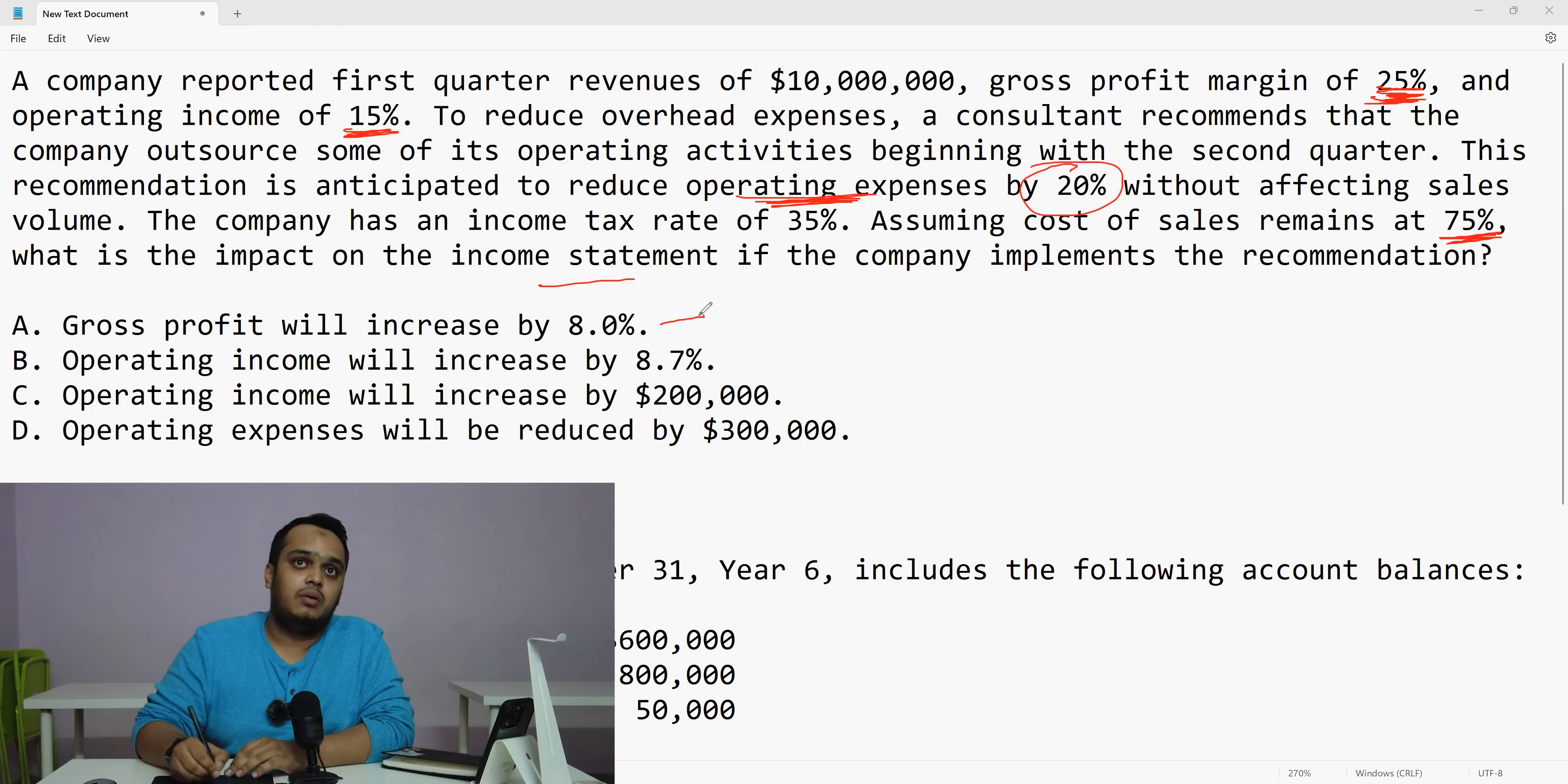So first of all, when these type of calculations are given, you can do it in two ways. What you can do, you can start taking one by one as an option and see whether they are right or not. And whichever suits in well right there, you can go ahead with it. Or the next way what you can do is, you can take down the profit, how it is right now, and take down the profit by reducing that 20% operating expense and have your profit and then compare which statement is right.